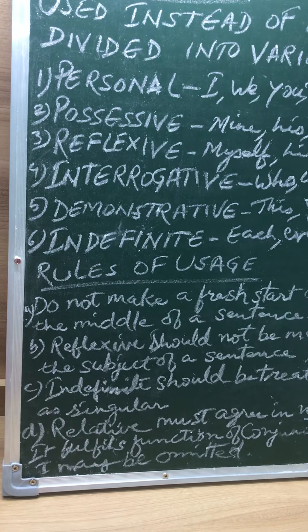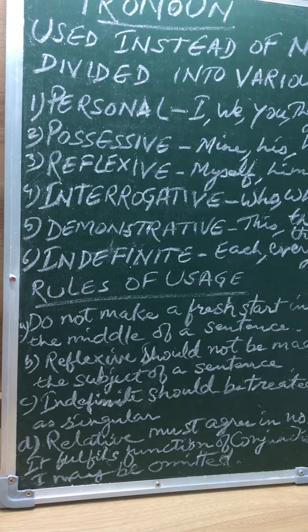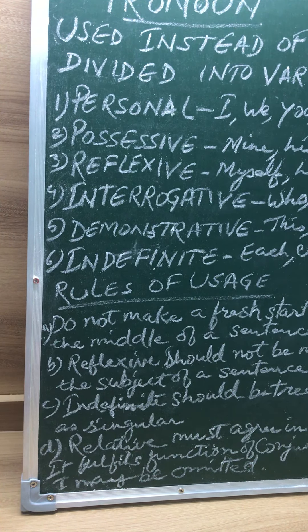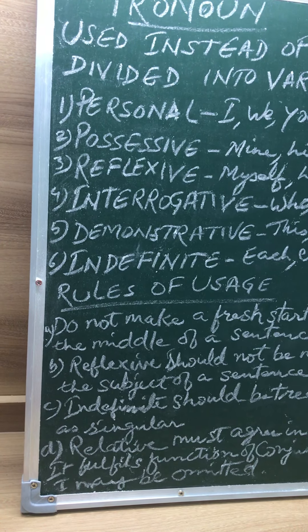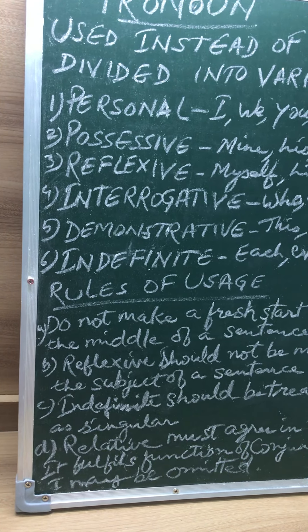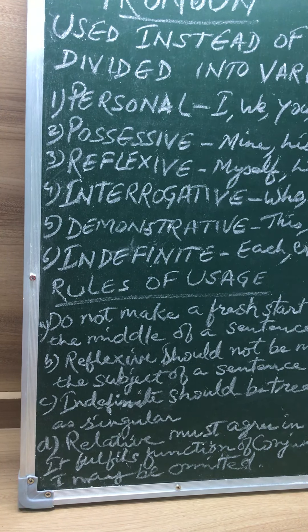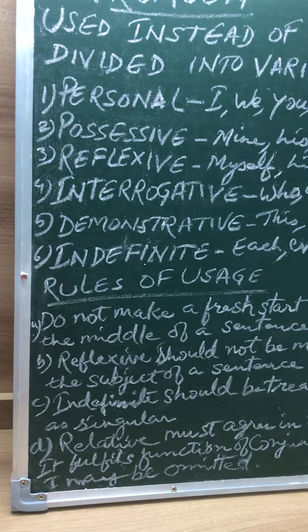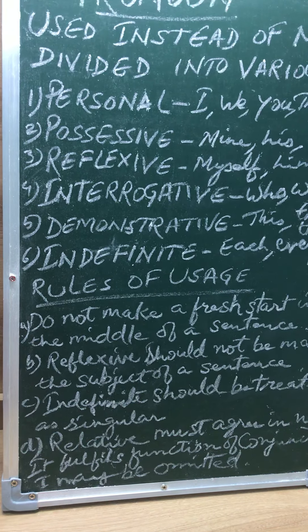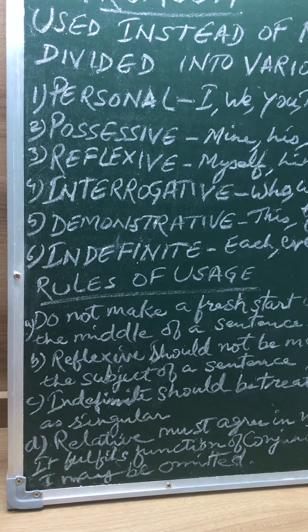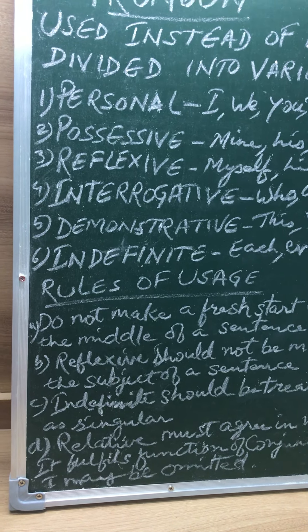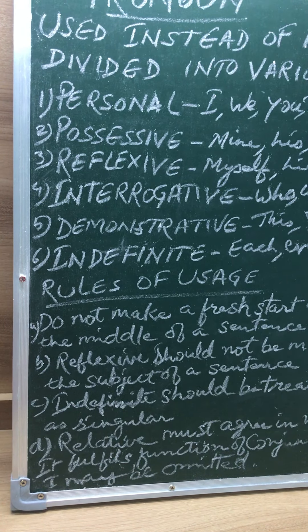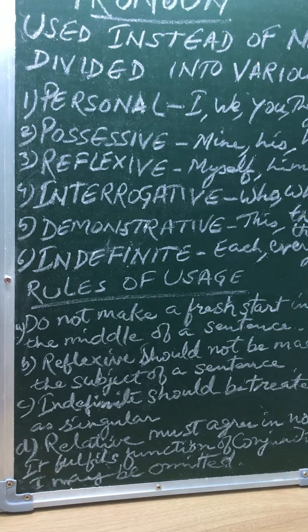The next point says that the indefinite pronoun 'one' is followed by 'one'. For example, 'one must do his duty' is wrong. The right form is: one must do one's duty. Similarly, 'one must think before he acts' is wrong; the correct form is: one must think before one acts.